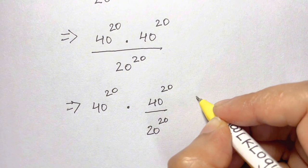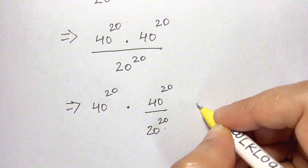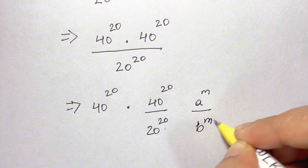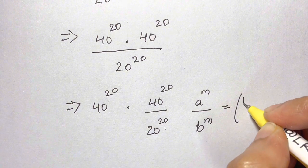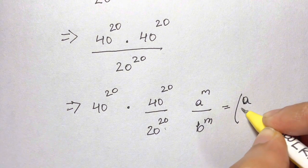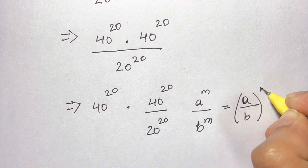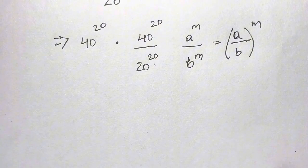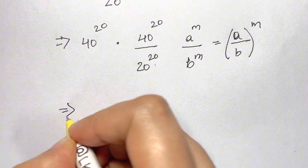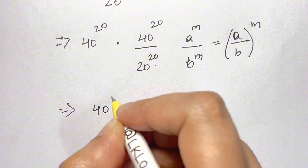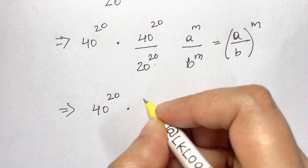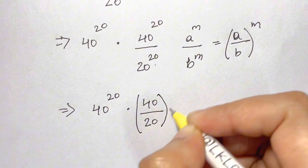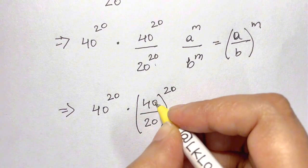Now we're going to use the rule: a to the power of m over b to the power of m equals a over b, whole to the power of m. Applying this here, we get 40 to the power of 20 times 40 over 20, whole to the power of 20.